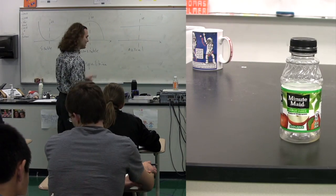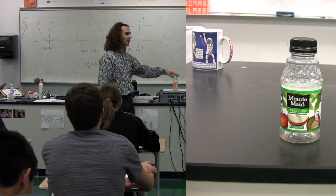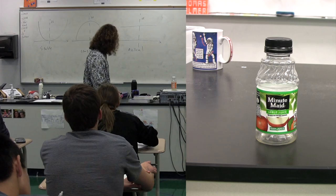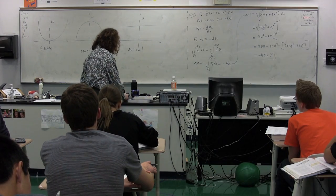So in order to get something that looks like that, this graph actually would not quite look like that. But that is the difference between stable, unstable, and neutral equilibrium.